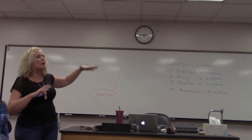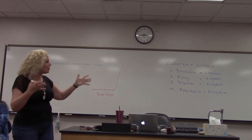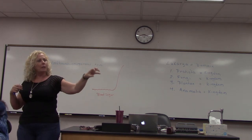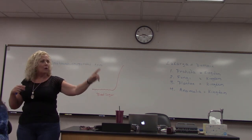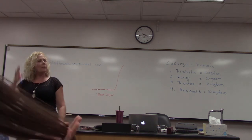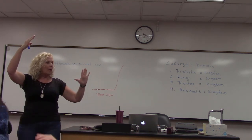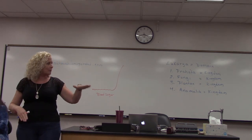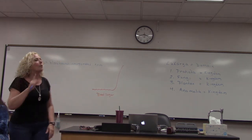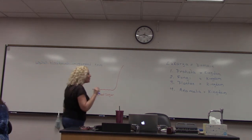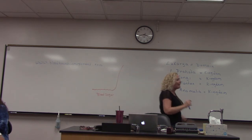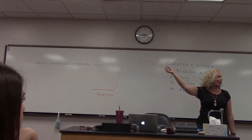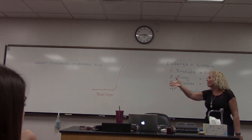If blood sugar stays high for long periods, clogs can form in blood vessels. A clog in a leg vessel could cut off blood to the foot, eventually requiring amputation. A clog in eye blood vessels can cause blindness. This is why prolonged high blood sugar is so dangerous — we need those levels to come back down to homeostasis.